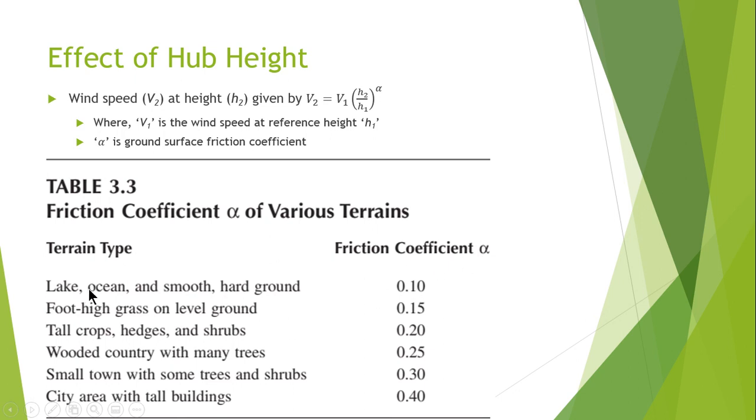The friction coefficients at lake, ocean, and smooth hard ground have a low ground surface friction coefficient, while city areas with taller buildings have a friction coefficient alpha of about 0.40. Now let's observe the effect of friction coefficient.